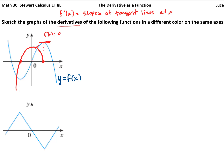After the second horizontal tangent, the slopes become increasingly negative, so the derivative continues downward. Due to the symmetry of the original graph, we can mirror this behavior. The resulting graph of f prime of x in red crosses the x-axis at the two points corresponding to horizontal tangents on f, is negative outside those points, and positive and hump-shaped between them.